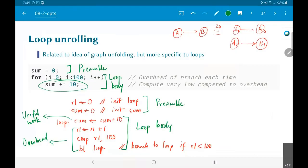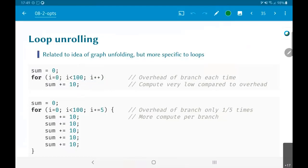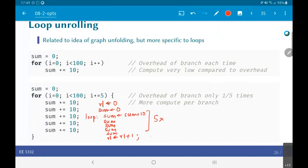Question is, what can I do about it? What if I rewrite my code to do something like this. Now what will happen is once again my code would probably look something of this sort. R1 equal to 0, sum equal to 0, and now I would have a loop where I would do sum equal to sum plus 10. I do this 5 times. And then I do R1 equal to R1 plus 1, compare R1 to 100, and branch less than to loop.